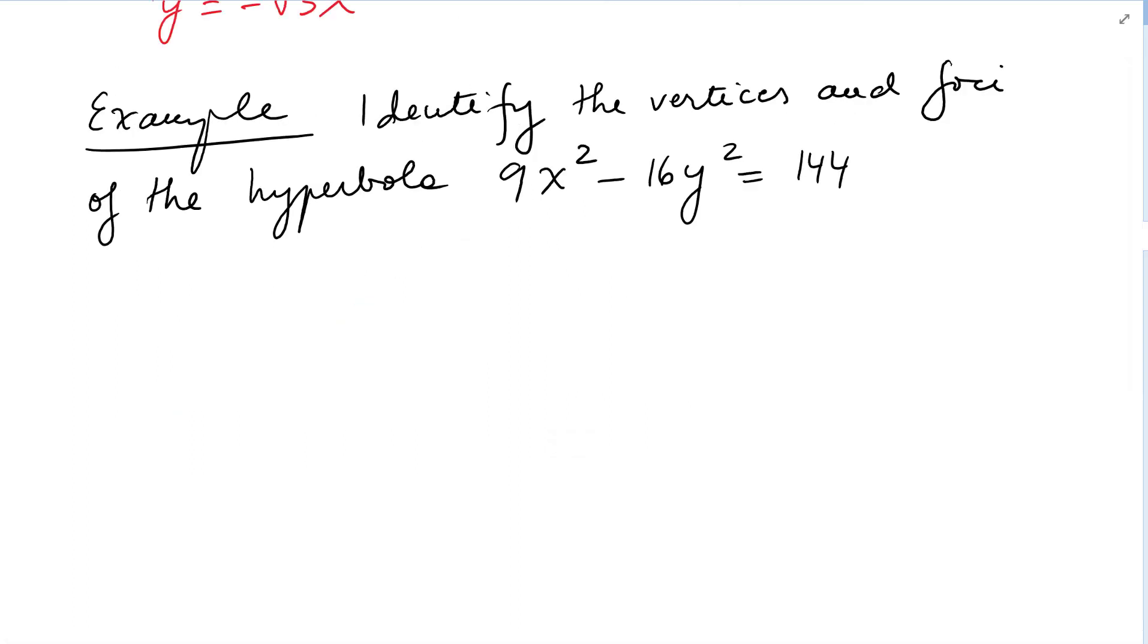Let's solve another problem: identify the vertices and foci of the hyperbola 9x² - 16y² = 144. Divide every single term by 144.